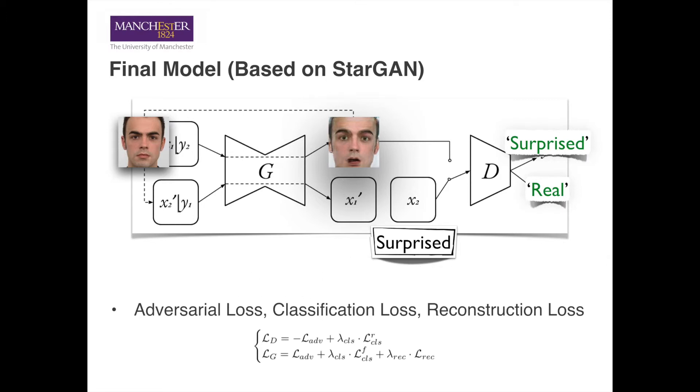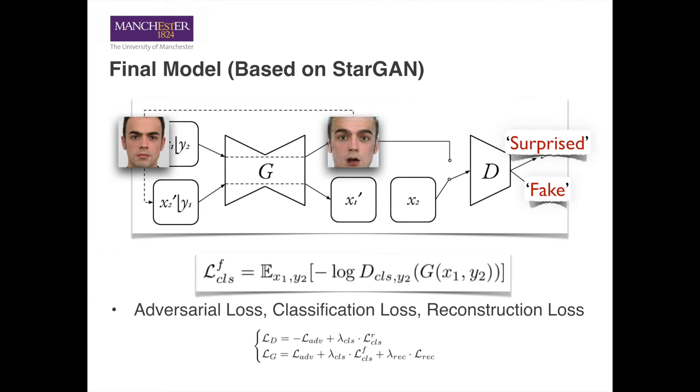Given the generated image, we want the discriminator to predict it as fake. But at the same time, we want the generator to produce expressions that will be classified by the discriminator into the same expression as the condition.